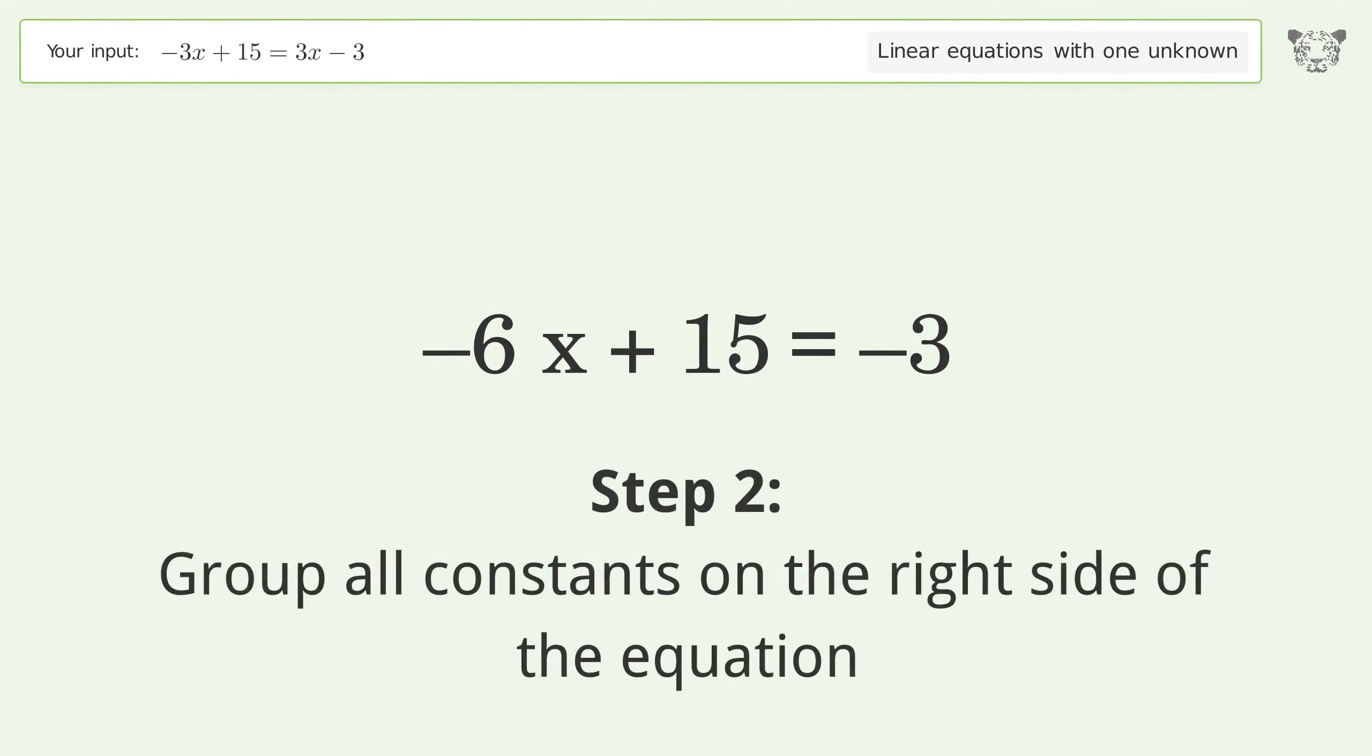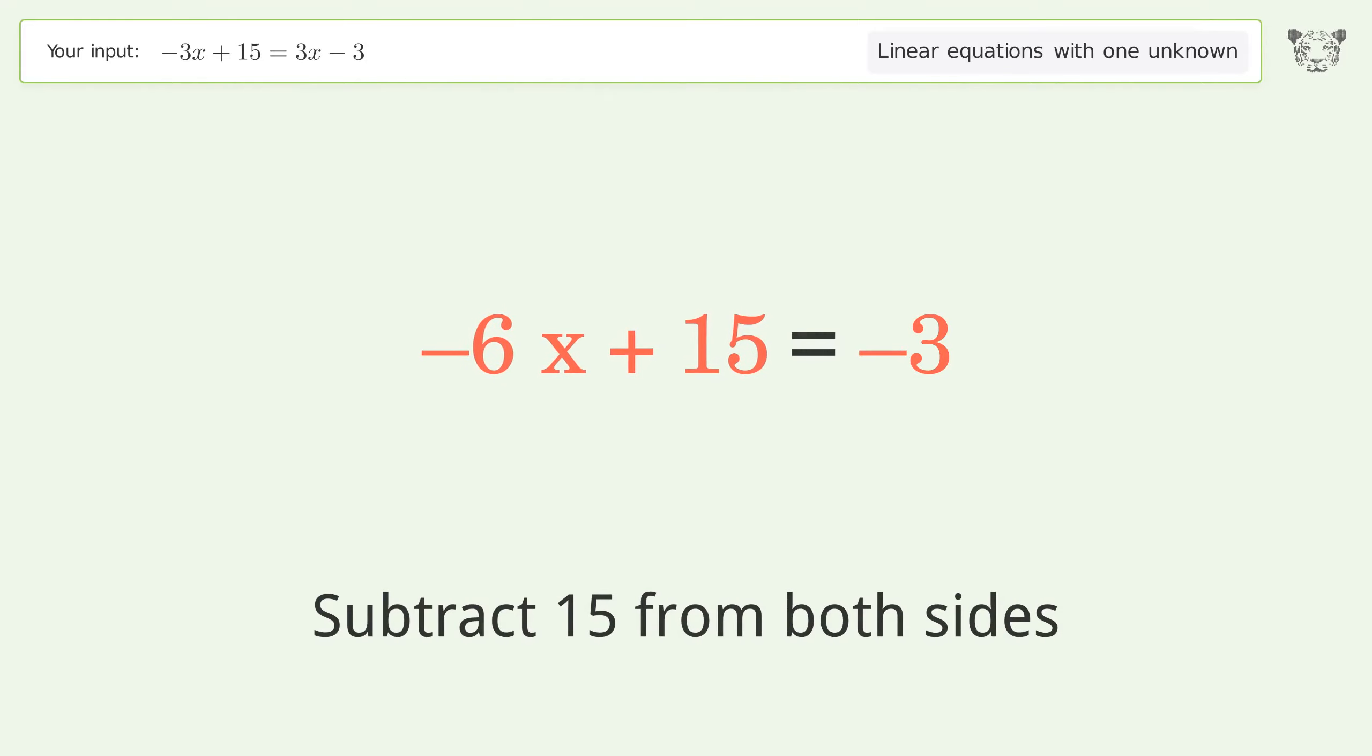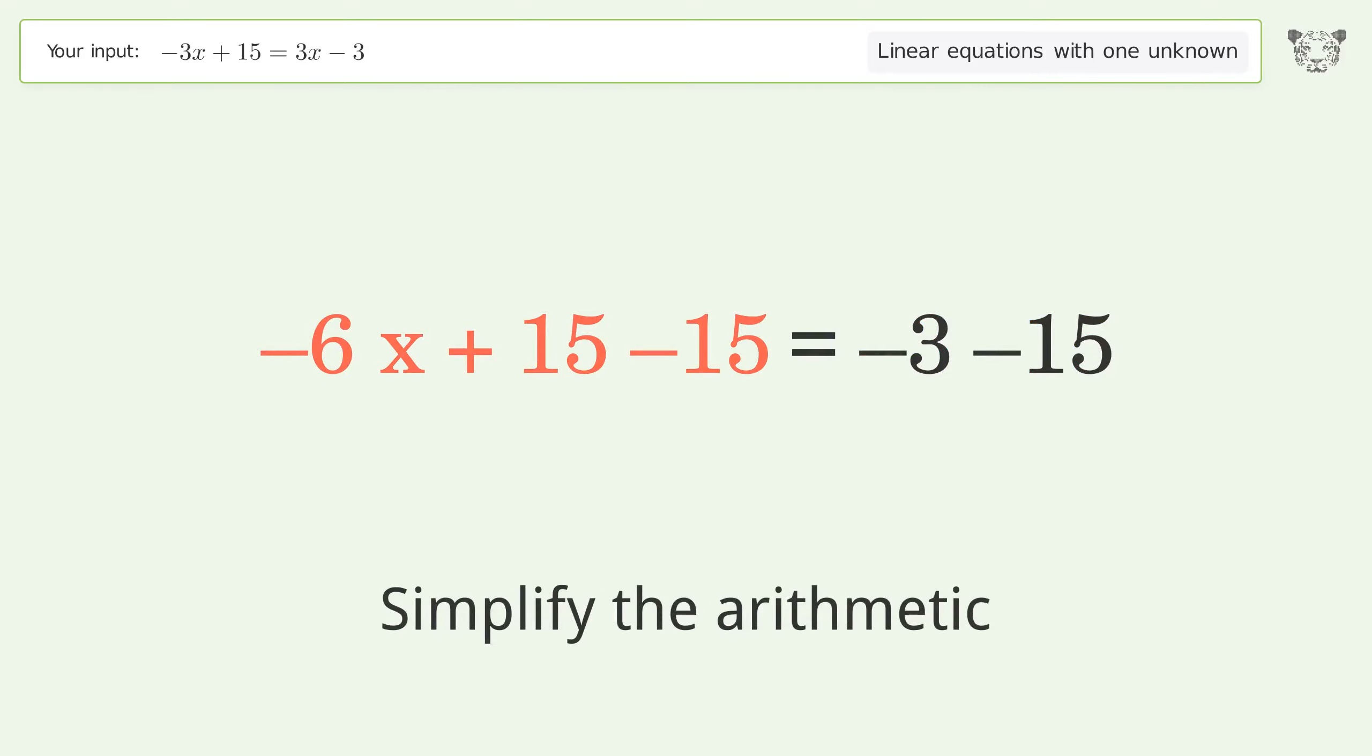Group all constants on the right side of the equation. Subtract 15 from both sides. Simplify the arithmetic.